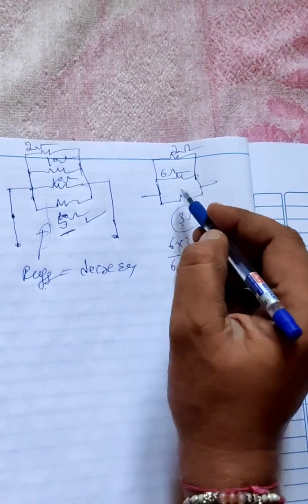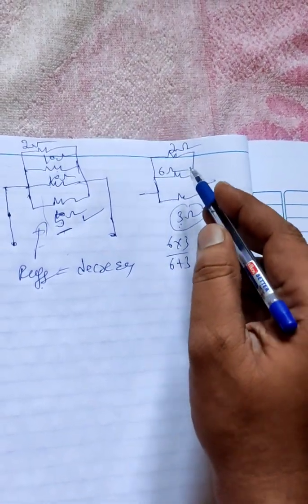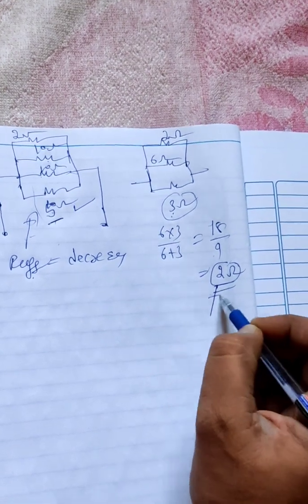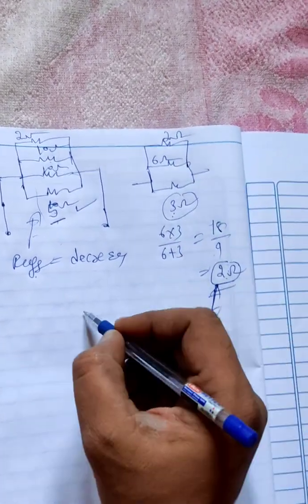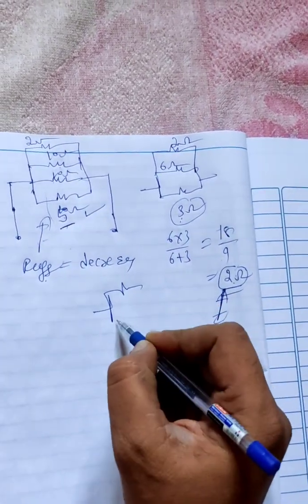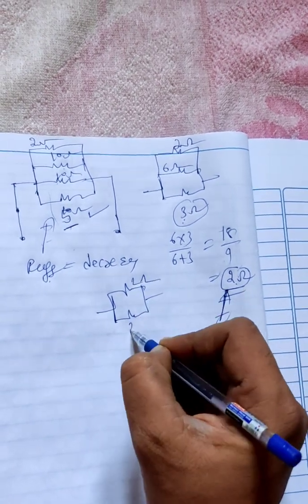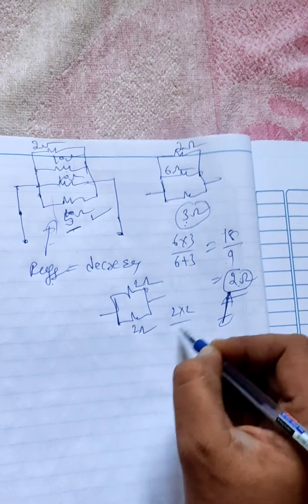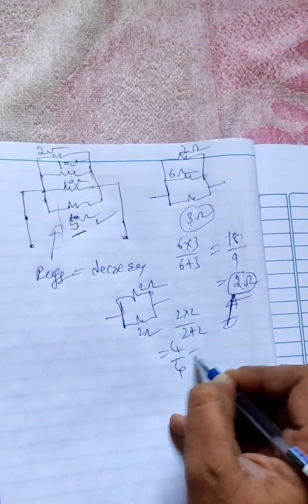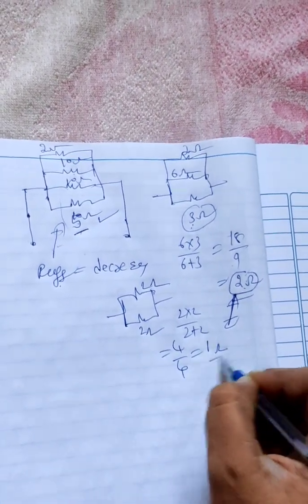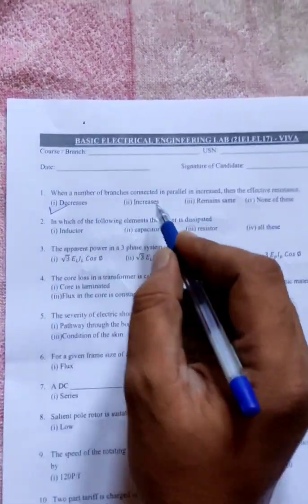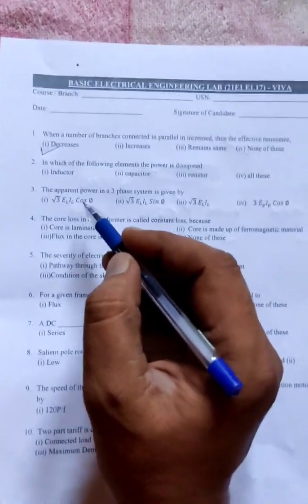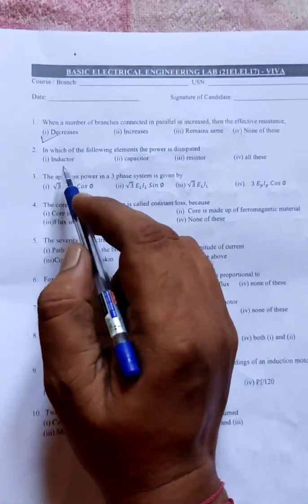Now let me take 2 ohm resistance. Again I added one more resistance in that branch. Your effective resistance you should get less than 2 ohms only. See, 6 parallel 3, what is answer? 2 ohms. Now 2 ohm and 2 ohm are connected in parallel. What is the effective resistance? 2 into 2 divided by 2 plus 2, 4 by 4 is 1 ohm. See, if you start increasing the resistors, your effective resistance is what? Decreases. You should explain in front of examiner like this, then they will understand that the student knows well about the subject.